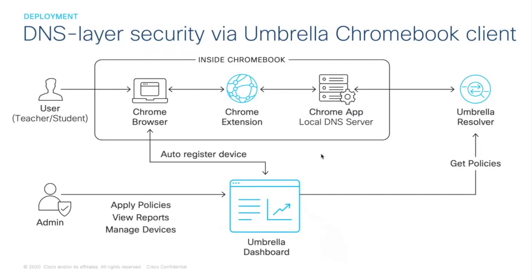The Umbrella Chromebook Client can be deployed using a Chrome extension and application available on the Chrome Web Store. Once deployed, when a user enters a URL into the Chromebook browser, the client extension copies the domain name from the URL and sends it to the Chromebook client app. The app then creates an EDNS query and sends the DNS request, including that EDNS information, to the Umbrella resolver. Depending on the policies you've set up, the resolver will respond either blocking or allowing that request.